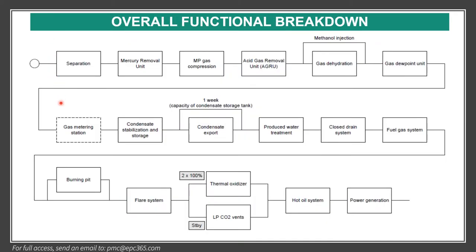This is a typical example of an overall functional breakdown. For example, here there is a separation unit, after which it goes to a moisture removal unit and then MP gas separation. Each of these systems, if they don't work, we lose availability of the plant — they are in series. There are also certain redundancies; for example, here there is a standby item. The gas metering station was put as not affecting productivity, though this was discussed and agreed by the company.